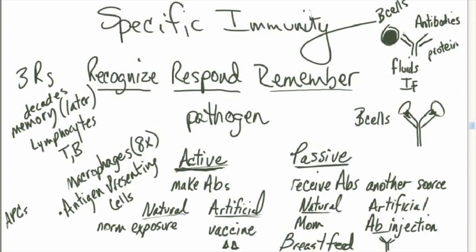The three R's: recognize, respond, and remember. T cells, B cells, and macrophages are recognizing, responding, and remembering the pathogen — the harmful invader. Pathogens are foreign invaders, and the way we identify them is by their surface markers that we call antigens. On the bad guy, on the pathogen, we call their surface marker an antigen, or more specifically, an antigenic determinant.